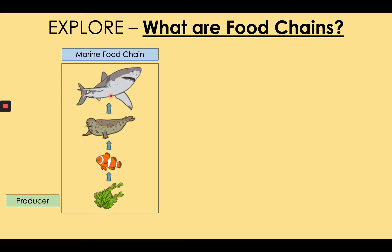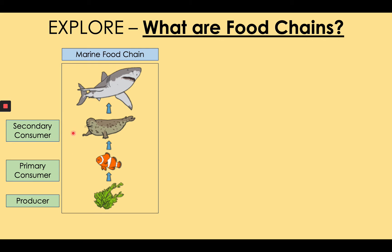Each of these arrows in a food chain means 'it gets eaten by.' So the algae gets eaten by what's called the primary consumer. The primary consumer is the first animal in a food chain and it eats plants — the producer — so it's almost always a herbivore, a plant eater. However, the primary consumer, in this case a small fish like a clownfish, is eaten by a secondary consumer like a seal. A seal is a larger organism that is a carnivore. Secondary consumers are almost always carnivores because they eat the primary consumer, not the producer.